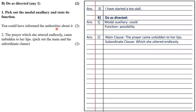The modal auxiliary in the sentence is could and the function is possibility. Question two: the prayer which she uttered endlessly came unbidden to her lips. Pick out the main and subordinate clause. The main clause is the prayer came unbidden to her lips and the subordinate clause is which she uttered endlessly.